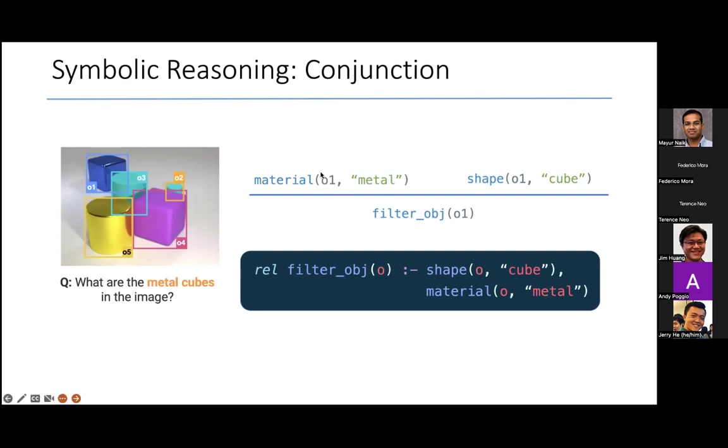I told you how we express relations, for example, the fact here that the object O1 in the scene is a metallic object. We use the relation material to denote what objects have what kind of material. Let's say I have another relation called shape, which is also extracted from this image, which captures what is the shape of each object, such as O1 is a cube.